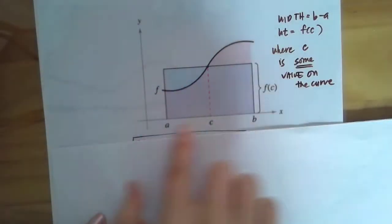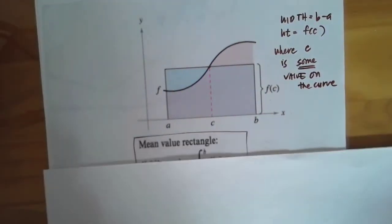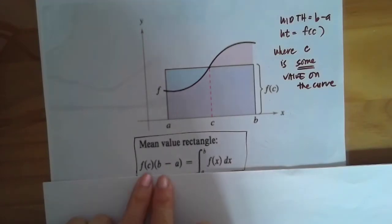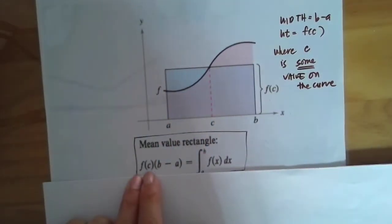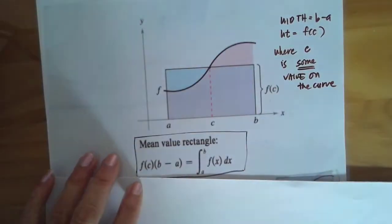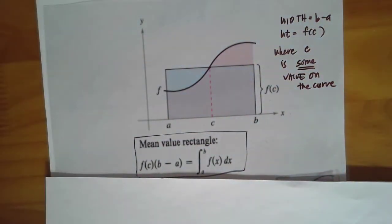Some c value on our curve. So the mean value of this rectangle is this, f(c) times (b minus a), because f(c) times (b minus a), it's basically height times width is this area here that we're looking for. So we're kind of just getting the average. That's what mean value actually stands for, it's the average.